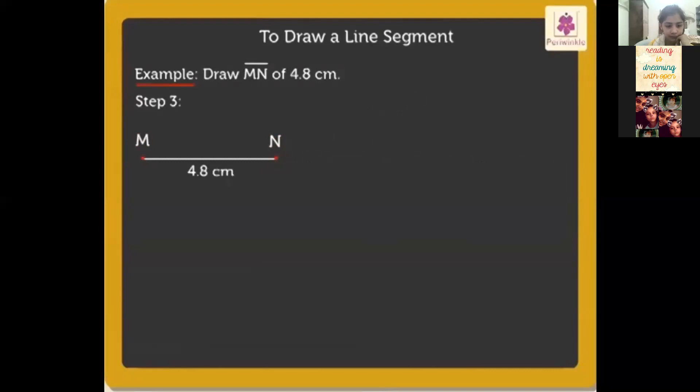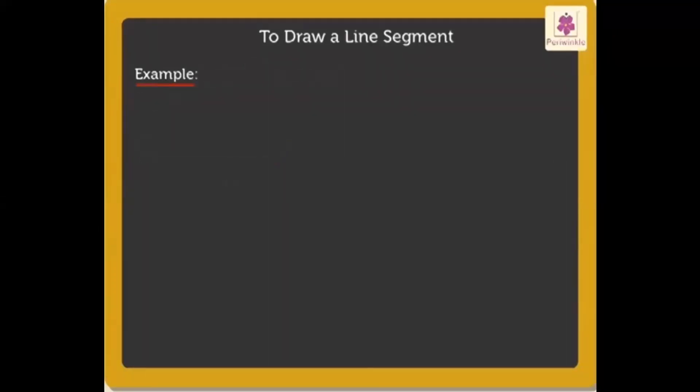Now, let's solve another example. Draw a segment AB of 7.7 centimeters. Segment AB of 7.7 is drawn like this.